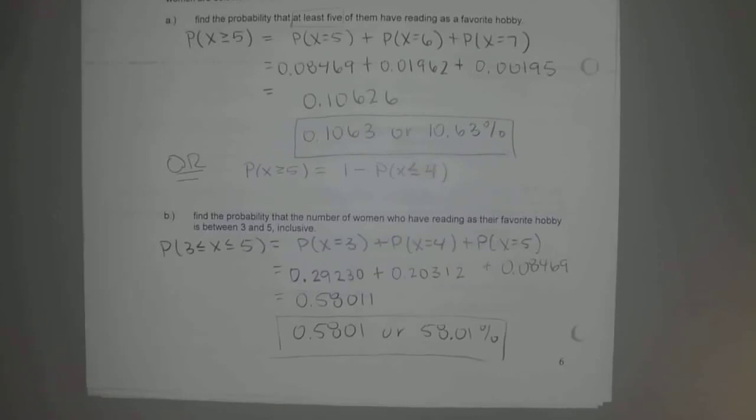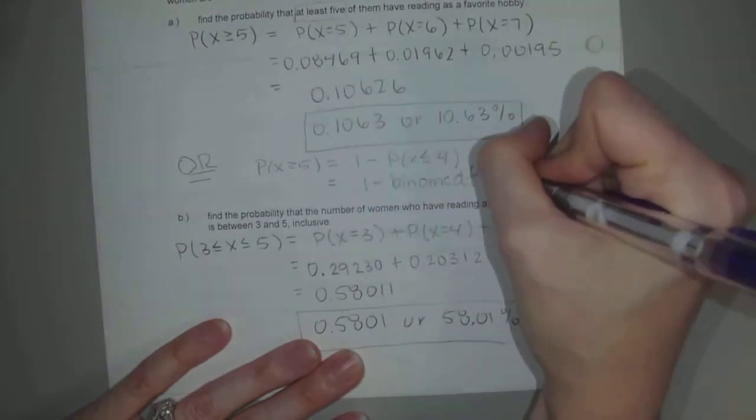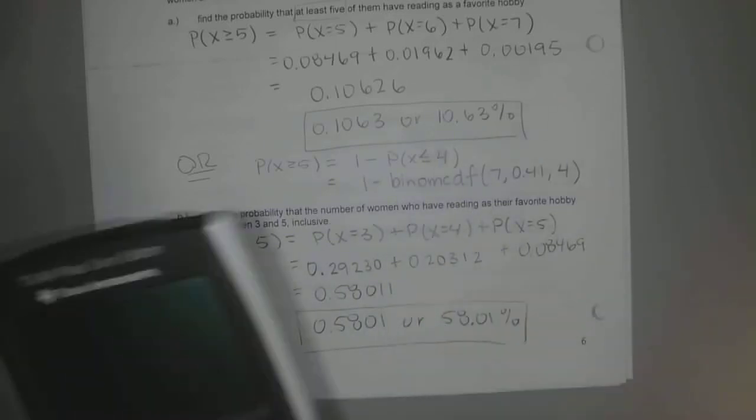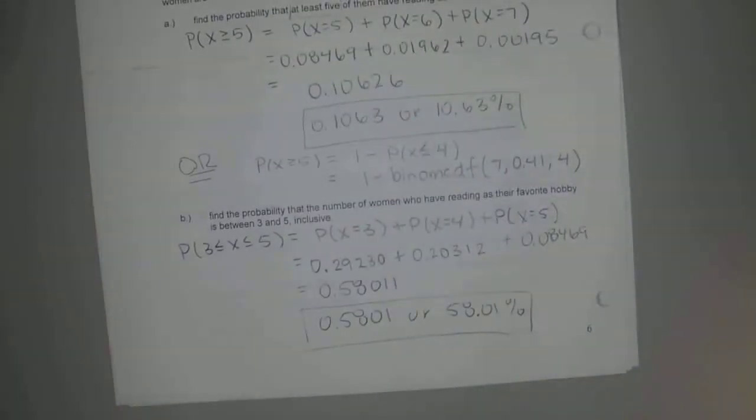And the reason why I'm showing you this is because the CDF feature starts at the bottom and counts its way up, but we don't have a feature that has, you know, like we're looking at the top. We're looking at five, six, and seven, and we don't have a feature in our calculator that shows the top. We just have a feature in our calculator that has the lower end. So in our calculator, guys, this is the same thing as one minus binomial CDF with N being 7, 0.41 being our P, and then four being the opposite of five or more. Do that in your calculator.